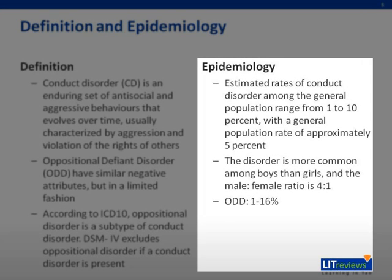The estimated rates of Conduct Disorder among the general population range from 1% to 10%, with a general population rate of approximately 5%. The disorder is more common among boys than girls, with a male to female ratio of 4 to 1. The prevalence rate of ODD is 1% to 16%.